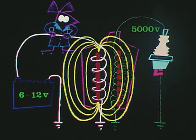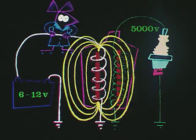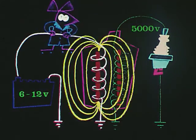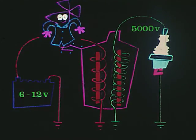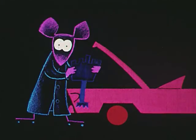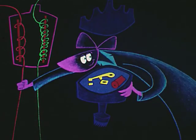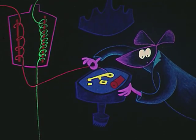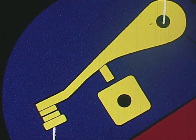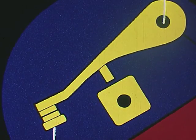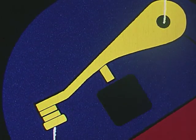Of course, this all happens extremely fast and many times each second. Switching the low voltage circuit on and off is part of the job of the distributor, which contains all the mechanically moving parts of the ignition system. Hooked into the low voltage circuit, the breaker points make and break the primary current, a timing switch which is synchronized to the engine's rotation by this revolving cam.